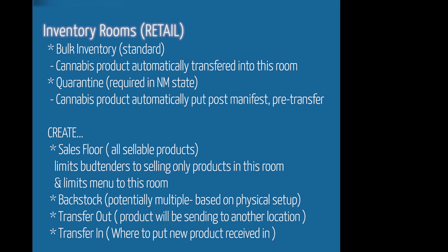Then you want to create a back stock room — and potentially multiple — depending on if you have multiple safes or multiple back stock locations where you're keeping product. The next rooms you want to create are a transfer out and a separate transfer in. This helps maintain the flow of product and keeps things from getting confused.